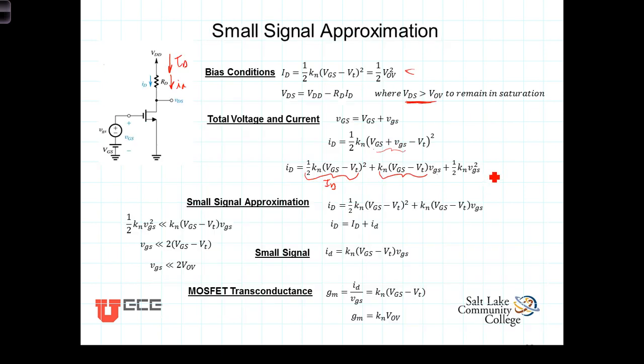Here comes the small signal approximation. This is a large term. VGS minus VT is our overdrive voltage. If VGS is small and you square it, that's going to be an even smaller term. What is the constraint on VGS that we can use this small signal approximation?